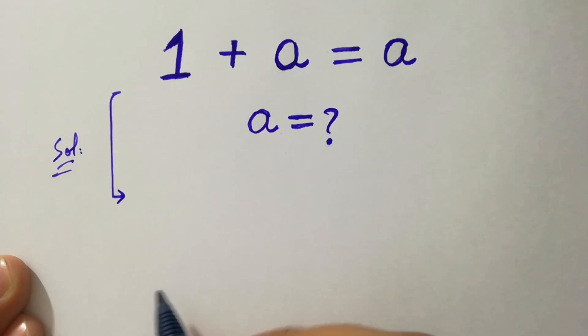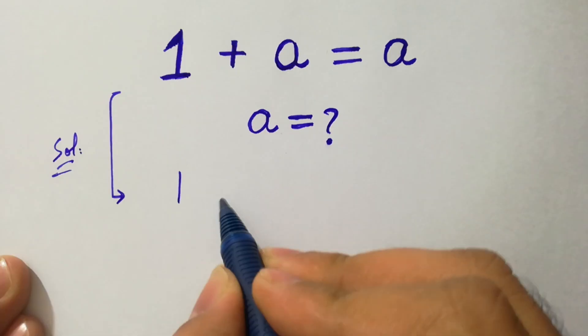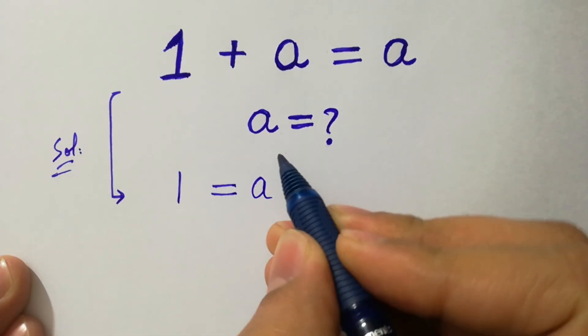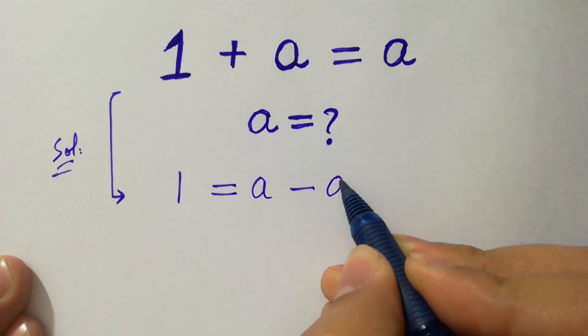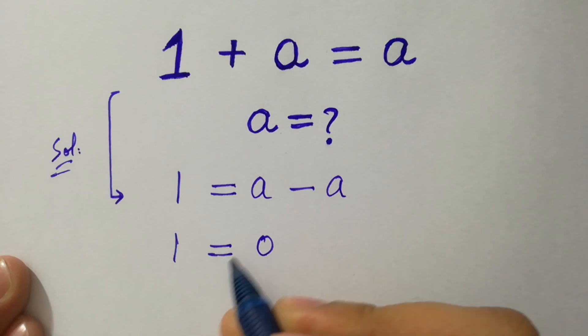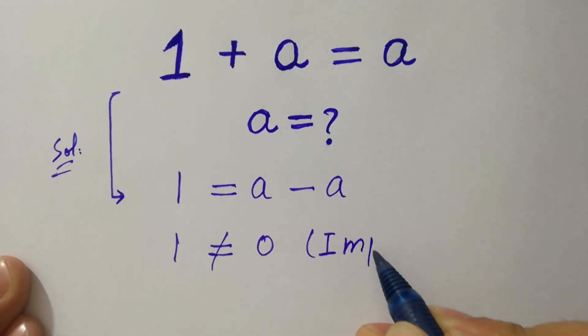If you solve this problem, we have 1 equals a minus a. 1 equals a minus a is 0. It shows that 1 does not equal 0. It means this is impossible to solve this equation.